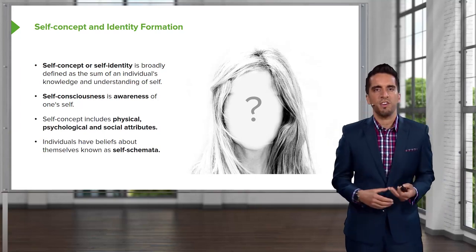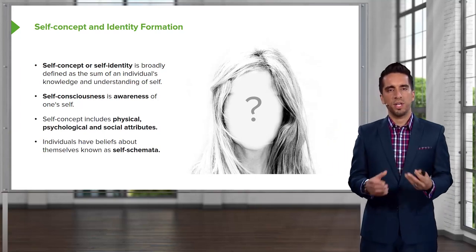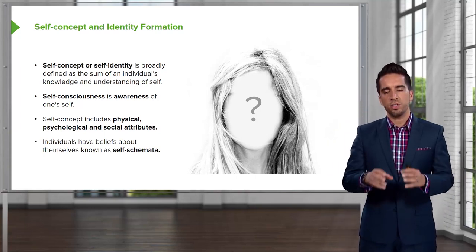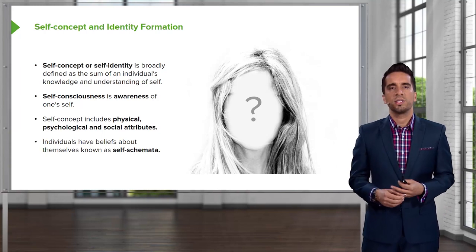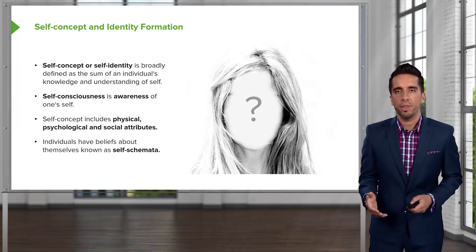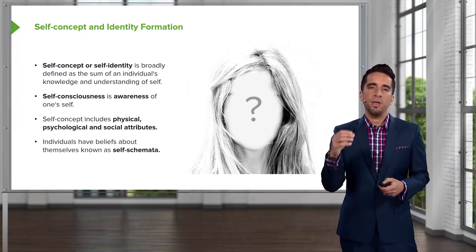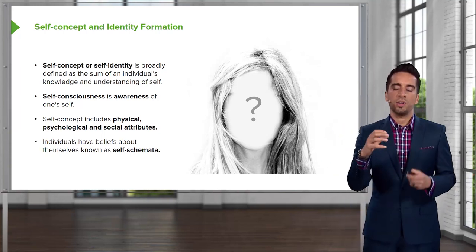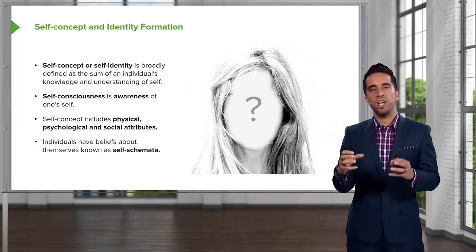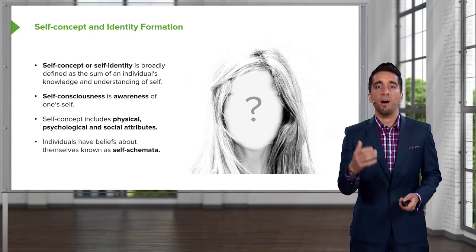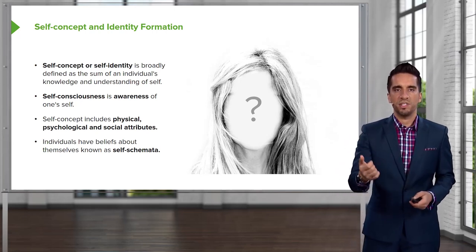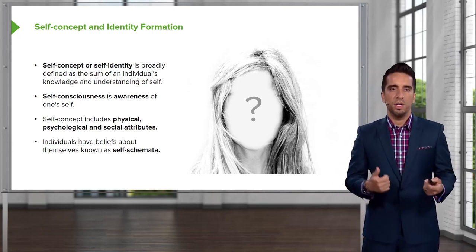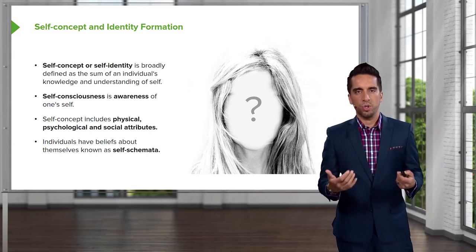Individuals have beliefs about themselves, and this is a term you'll need to know called self-schema. These are representations that you have of yourself based on those different properties of physical, psychological, or social attributes.